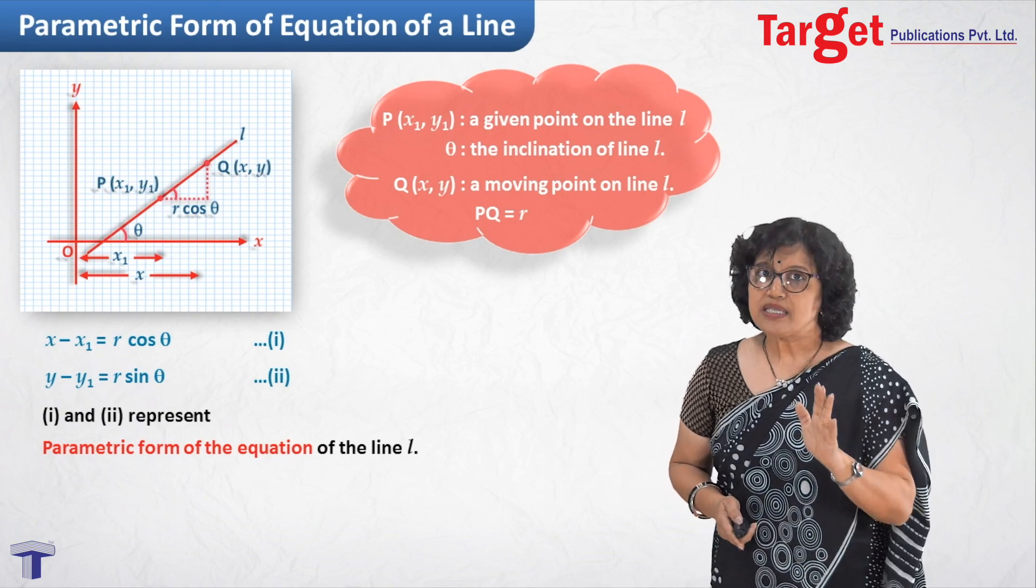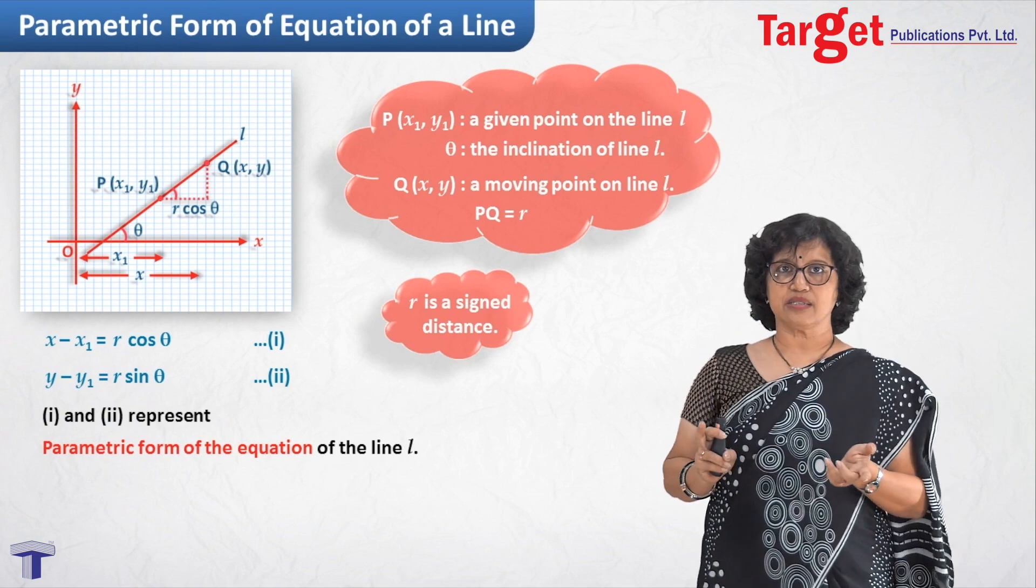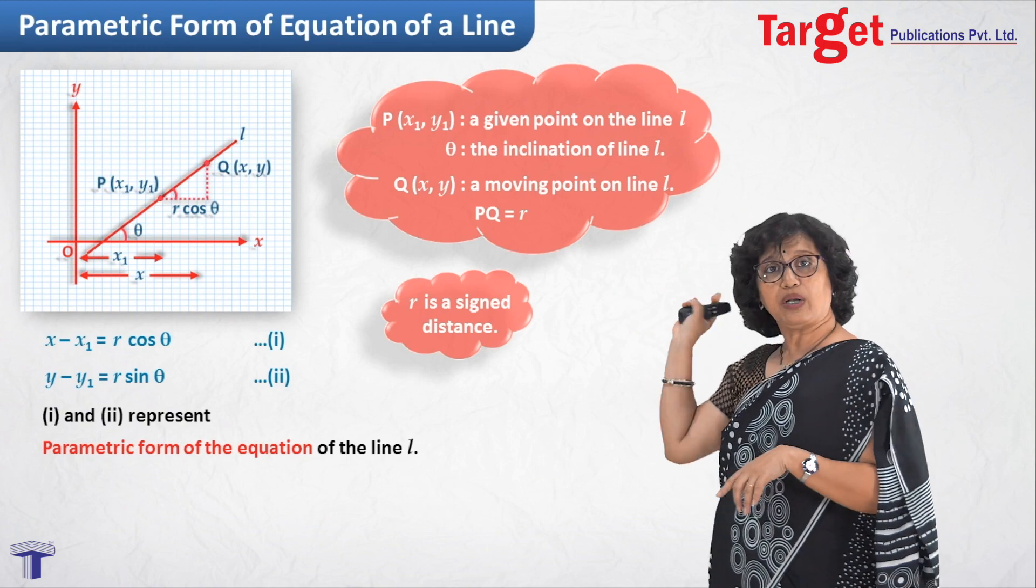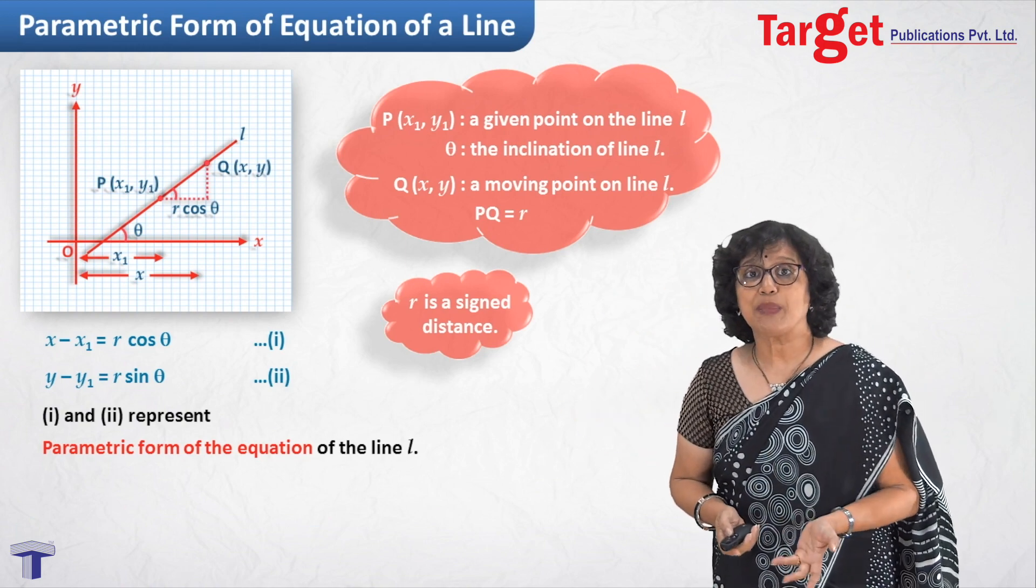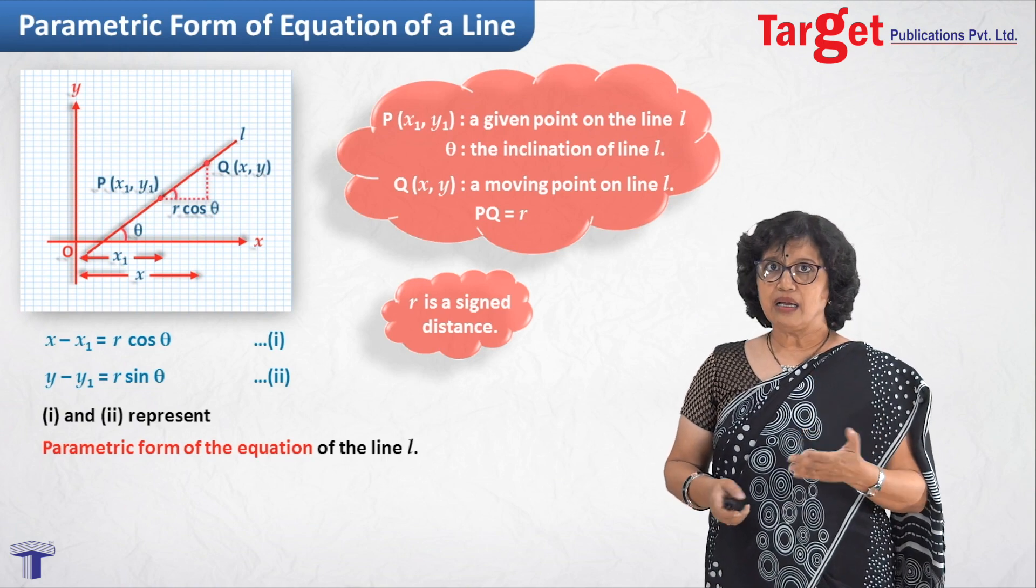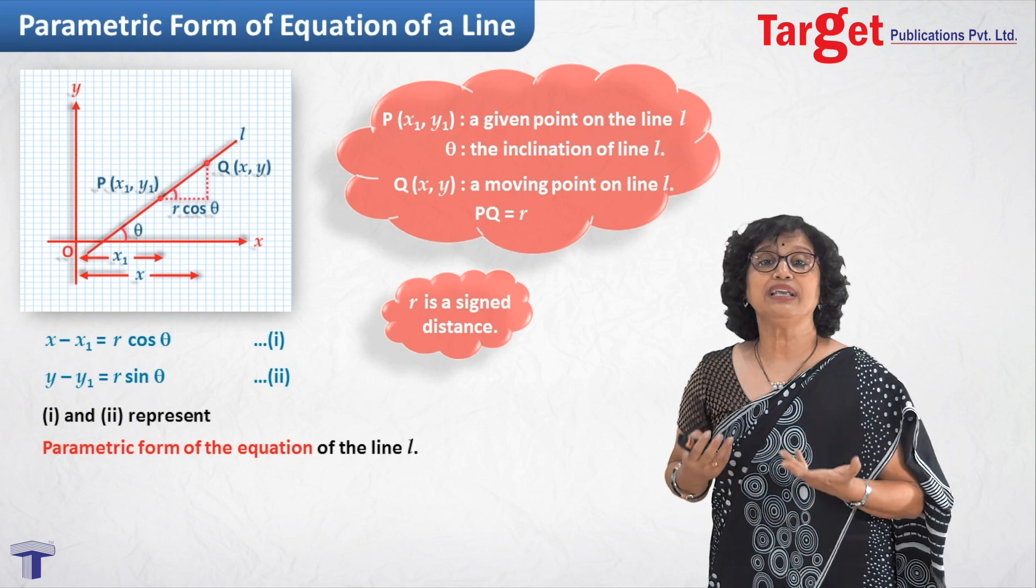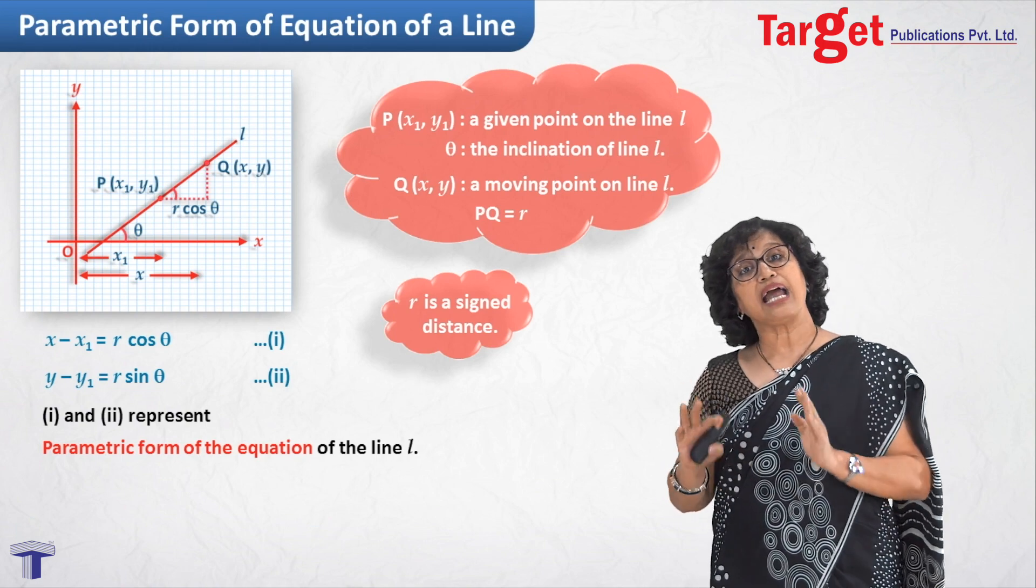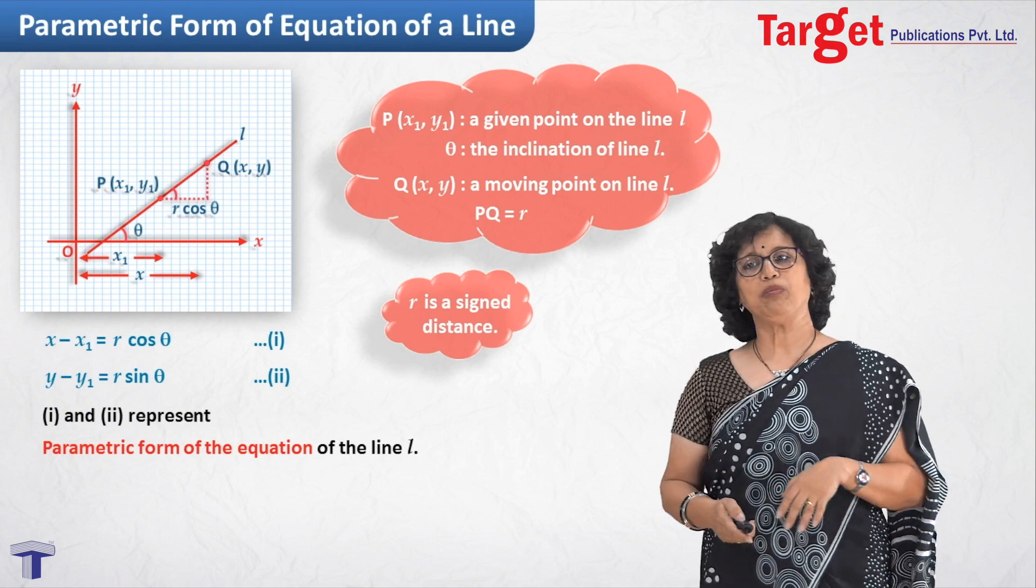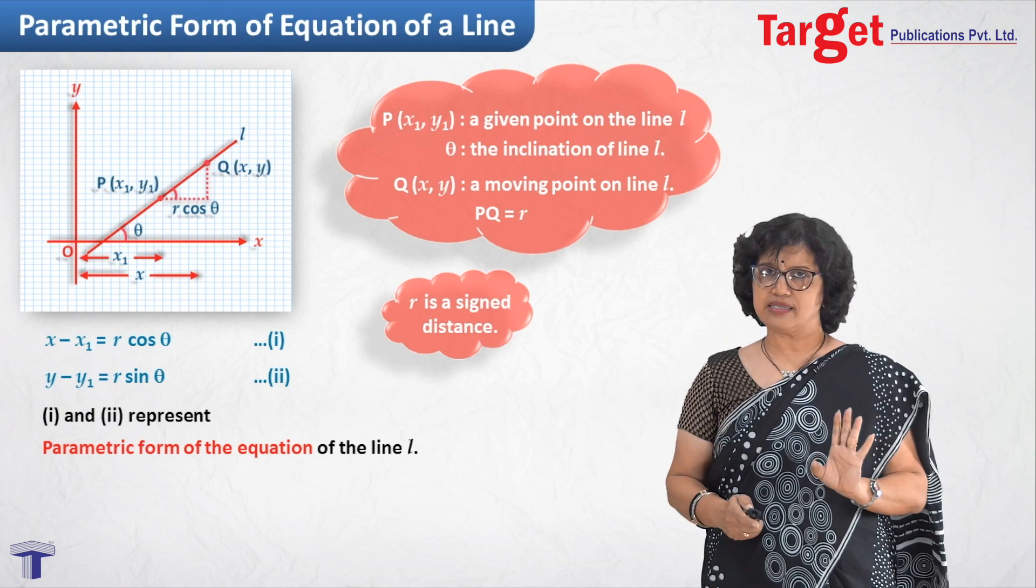Now, you must pay attention to something. That r is a signed distance because position of Q is important, whether it is above P or it is below P on the line. So obviously we are expecting since it is coordinate geometry, is r a signed distance? Yes, it is a signed distance. Now when do we take it as positive and when do we take it as negative? That you will get to understand when you will start solving problems. But for the time being, you just understand that r is a signed distance.